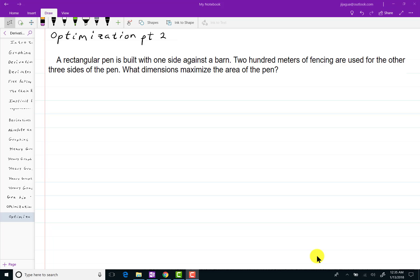Here's a second problem in the world of optimization. A rectangular pen is built with one side against a barn. 200 meters of fencing are used for the other three sides of the pen. What dimensions maximize the area of the pen?